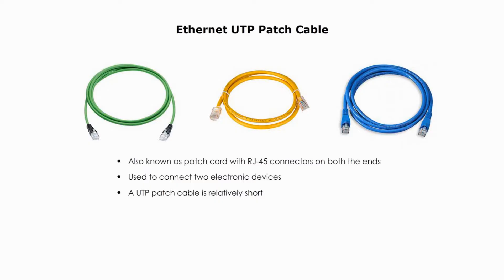A UTP patch cable is relatively short. An Ethernet patch cable can be as short as 3 inches long, and it can be 25 feet long. Most often, you will see 6 to 9 foot long patch cables in office and at home.